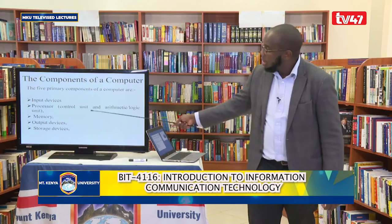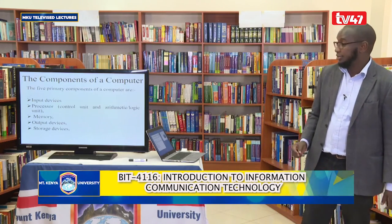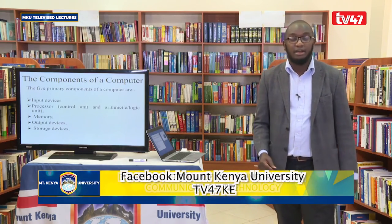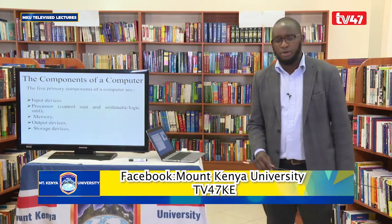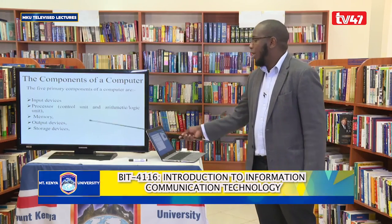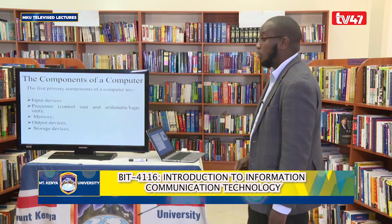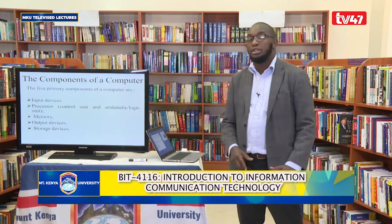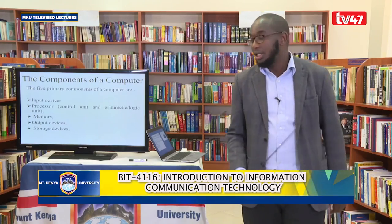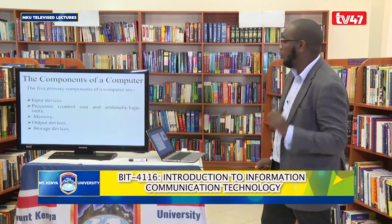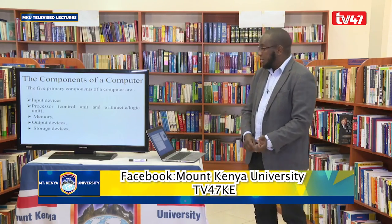Then we have the last component: storage devices. Different storage devices include the hard disk, flash disk, and CD-ROM. Before about 15 years ago, around 2015, we had something called the diskette, which had a memory of about five megabytes. Now we're talking about terabytes. As we increase the speed of computers, we are increasing the storage capacity. We have two major types of storage devices — primary and secondary storage devices.